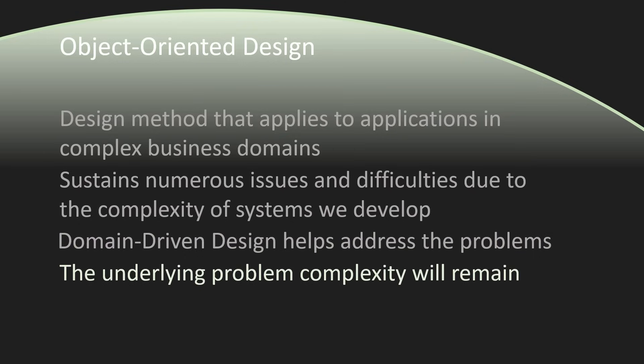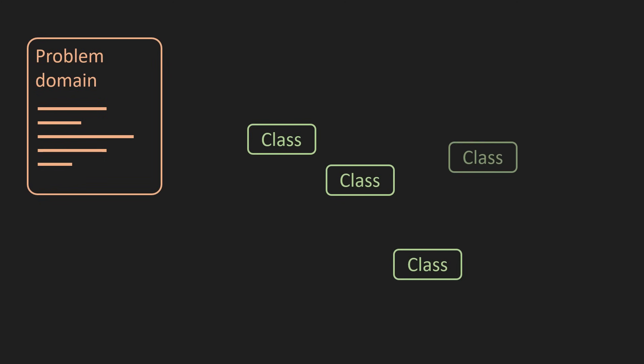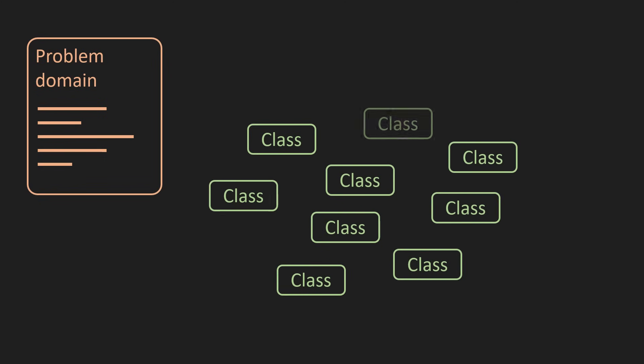The principal problem we face is complexity, and complexity will remain with or without DDD. It won't just go away. But we can make coping with complexity a whole lot easier if we approach it differently. The complexity in the business domain causes the proliferation of classes. These classes exhibit many interactions.